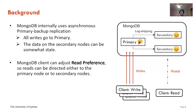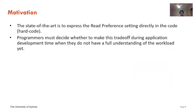What we are actually doing here is trading data freshness for performance. The data we get might be somewhat stale, but the performance is much better. From this analysis, we find that deciding when to send a reading request to the primary versus the secondary copy is something to be decided during application runtime.